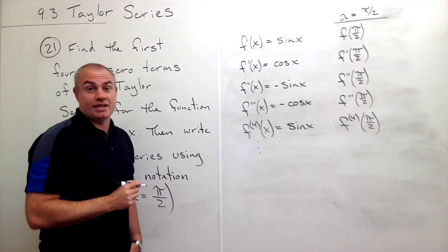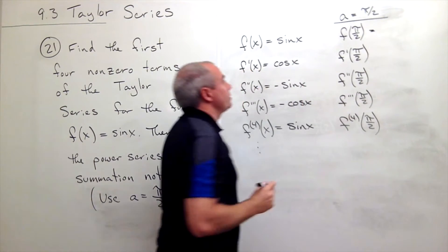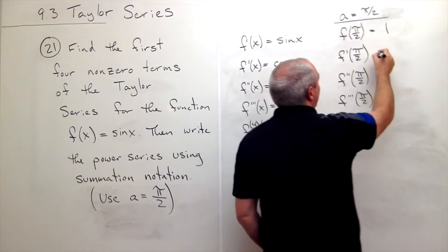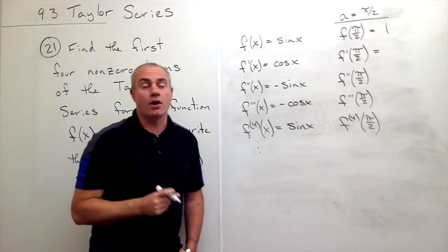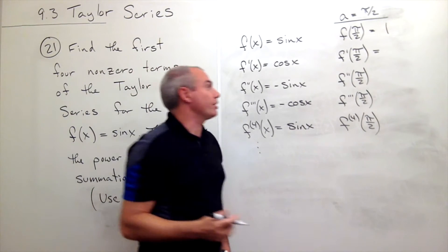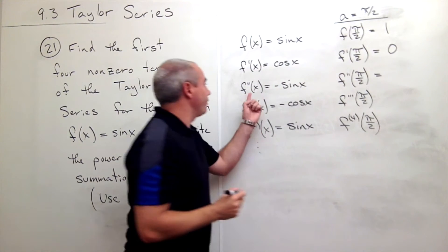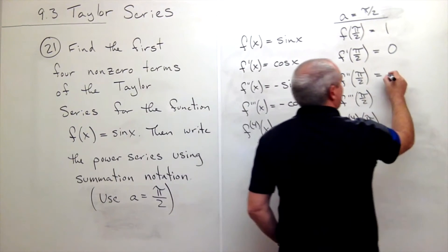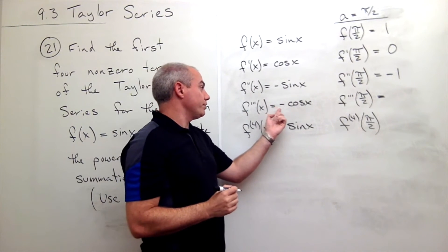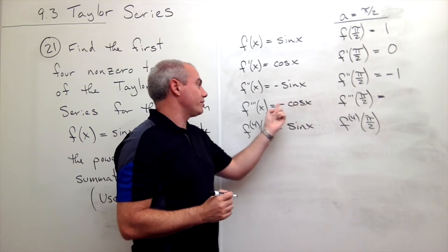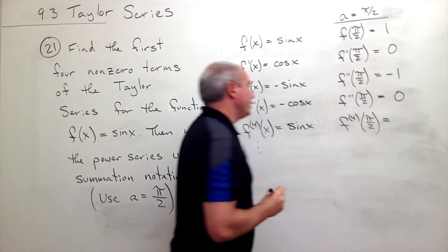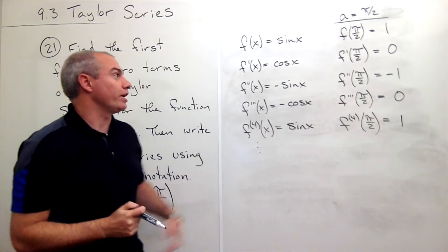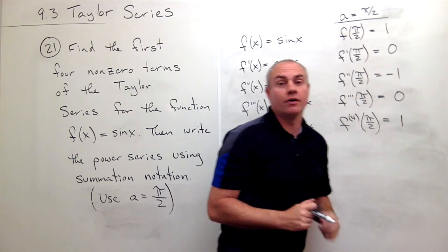Let's plug these things in and see what we get. If we plug in pi over two to sine of x, sine of pi over two is one. If we plug in pi over two to cosine of x, we get cosine of pi over two, which is zero. Plugging pi over two into negative sine gives us negative sine of pi over two, which is negative one. Then we get negative cosine of pi over two, which is zero. And finally sine of pi over two, which is one again. So we see a pattern: one, zero, negative one, zero, one, zero, negative one, zero, and so on.